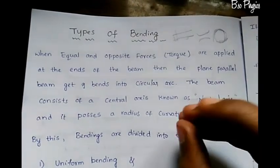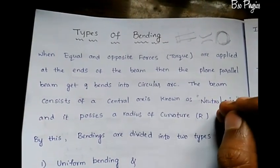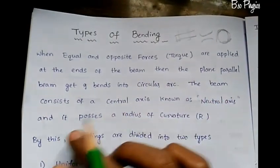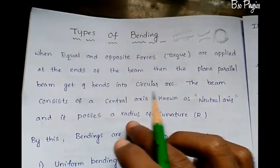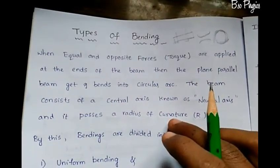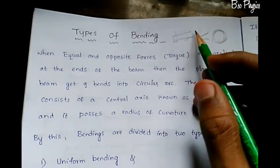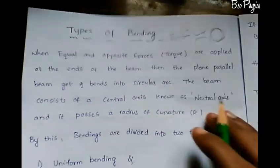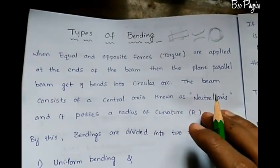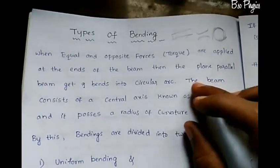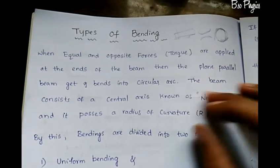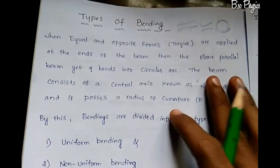The key point is that we have a neutral axis. We also have a radius of curvature. Let's go to the diagram to explain these concepts.